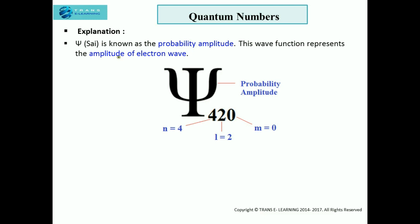First of all, what is ψ? Ψ is known as the probability amplitude. This wave function represents the amplitude of an electron wave. Here the numeric values represent different quantum numbers.